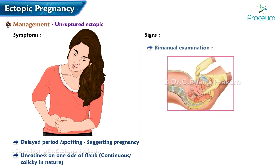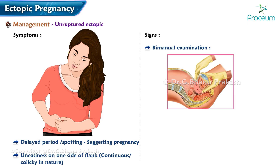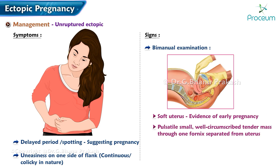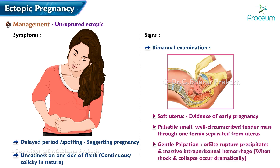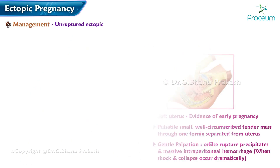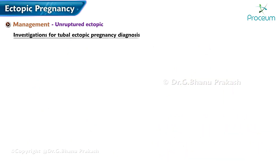Signs of unruptured ectopic: on bimanual examination, the uterus is usually soft, showing evidence of early pregnancy. A pulsatile, small, well-circumscribed tender mass may be felt through one fornix, separated from the uterus. Palpation should be gentle, as rupture may precipitate massive intraperitoneal hemorrhage with dramatic shock and collapse.